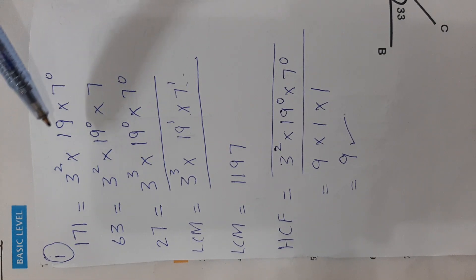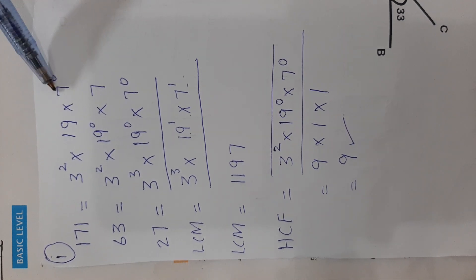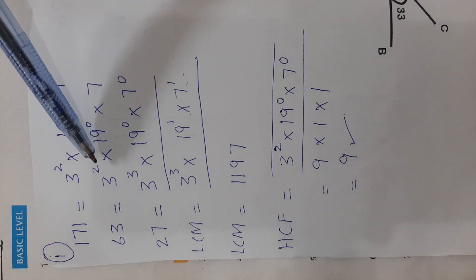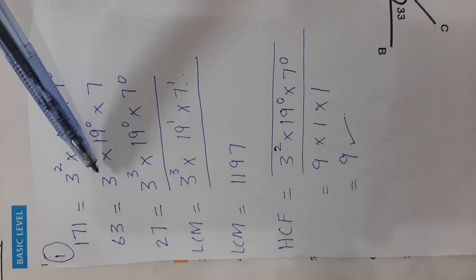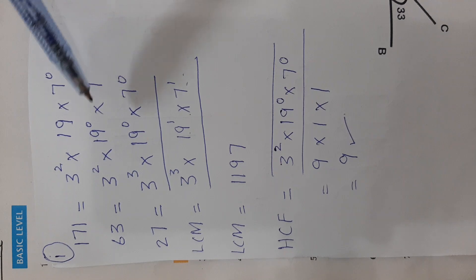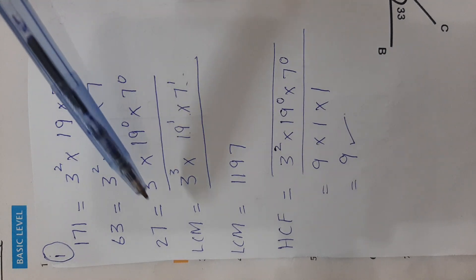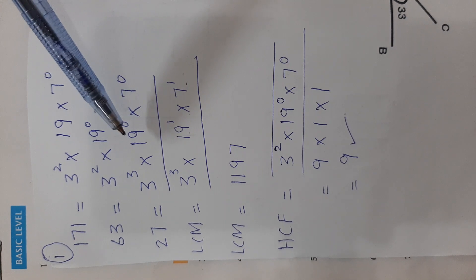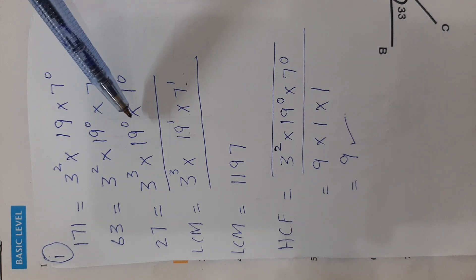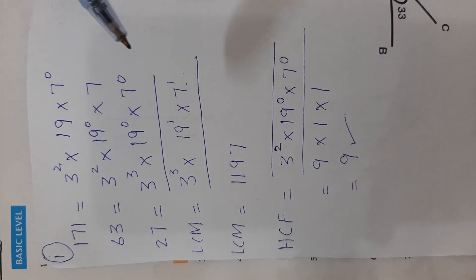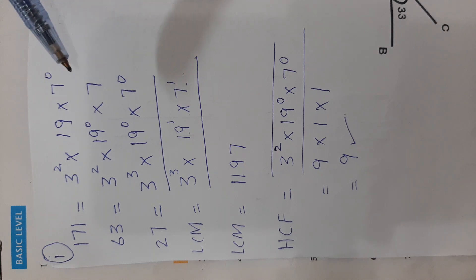Prime factorization: 171 = 3² × 19, and 7⁰ is entered to complete the column. 63 = 3² × 7, and 19⁰ is entered to complete the 19 column. 27 = 3³, and both 19⁰ and 7⁰ are entered to complete the columns of 19 and 7. The answer won't change since any number to the power 0 is 1.